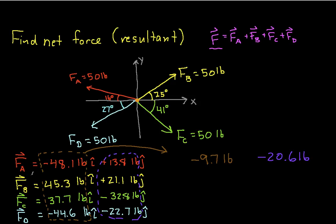So we can say then that our resultant force is given by this x component times the unit vector in the x direction minus 20.6 pounds times the unit vector in the y direction.